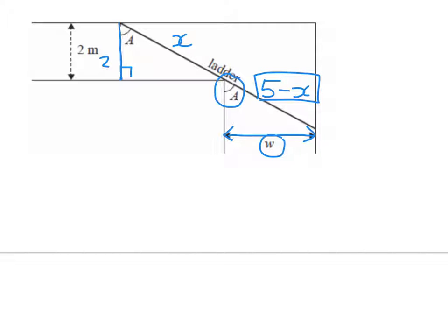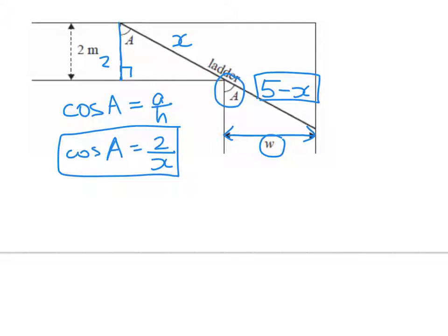Alright, we're still not really sure where we're heading, but we're looking for an expression for w. So from the first one, the cosine of angle a is equal to a over h. So cos a equals 2 over x. Can we say something about the next triangle? Yes, we can. We can say sine of a is equal to o over h. So sine of a is equal to w over 5 minus x. Let's see if we're starting to have a strategy for figuring out the minimum width of the corridor.